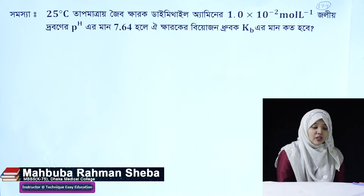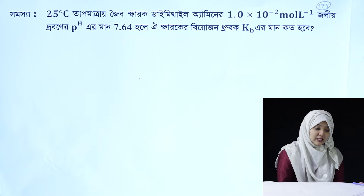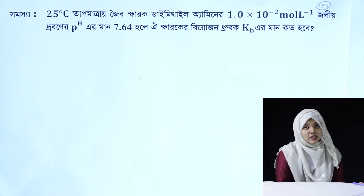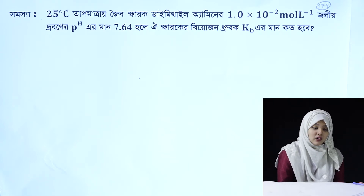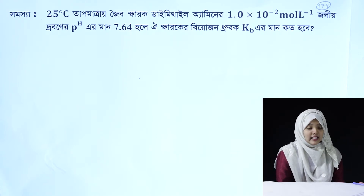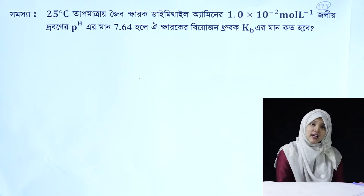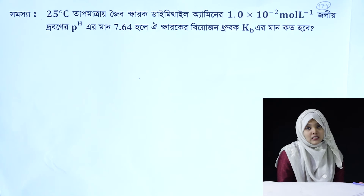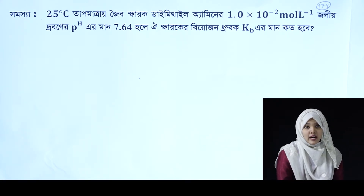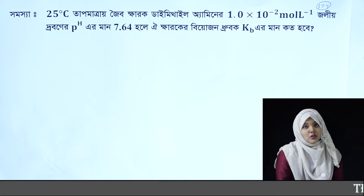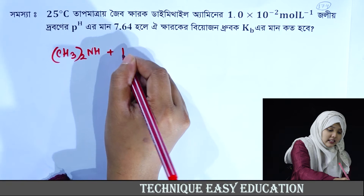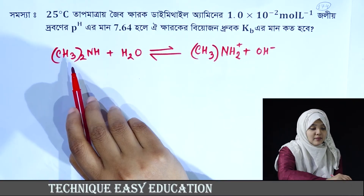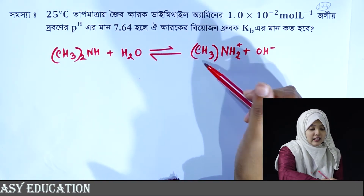We are going to show you how to do the pH calculation. In this case, I will write Dimethylamine reacting with water. The Dimethylamine accepts a proton and forms the dimethylammonium ion, which is called the H₃O⁺ ion.